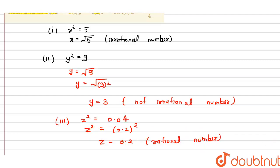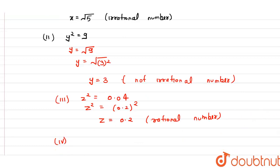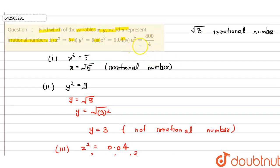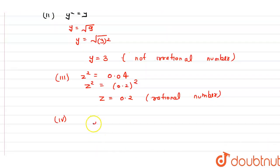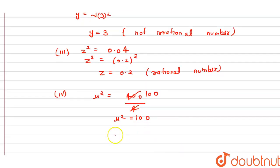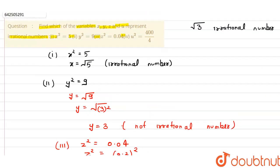The fourth part is u² = 400/4. Simplifying, 400 divided by 4 gives u² = 100. Taking the square root gives u = 10, which is a rational number. So in conclusion, only the first part — x² = 5, giving x = √5 — is irrational. The second, third, and fourth parts all yield rational numbers.